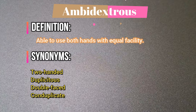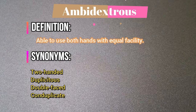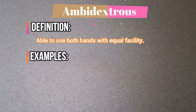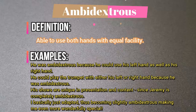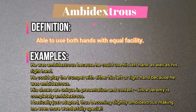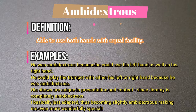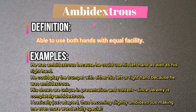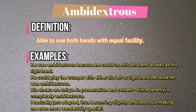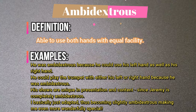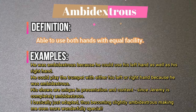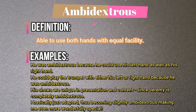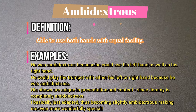Now let me show examples of the word ambidextrous in sentences. He was ambidextrous because he could use his left hand as well as his right hand. He could play the trumpet with either his left or right hand because he was ambidextrous. His shows are unique in presentation and content.